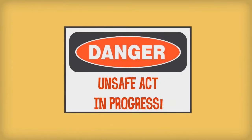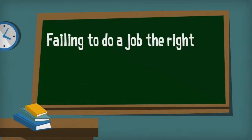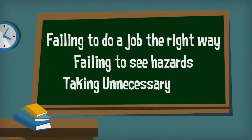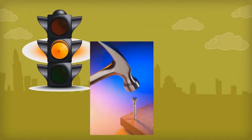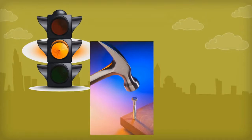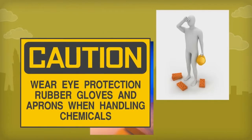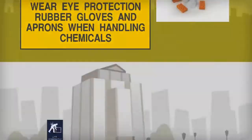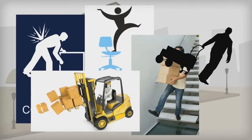Unsafe acts are things like failing to properly do a job, failing to see hazards, or taking unneeded risks — for example, speeding up to make the yellow light, using tools in wrong ways, using damaged or defective tools, not using proper personal protective equipment, ignoring the safety data sheet for chemicals you are using, or deliberately violating safety rules and procedures. How many unsafe acts can you spot today? Which ones are you doing?